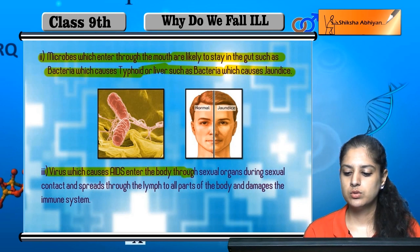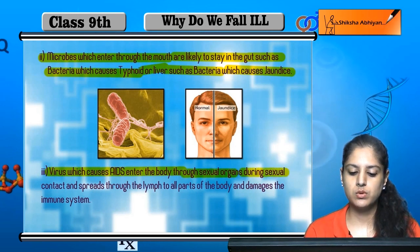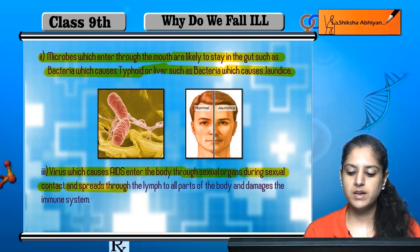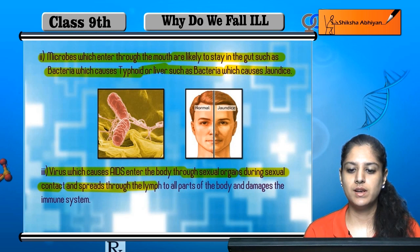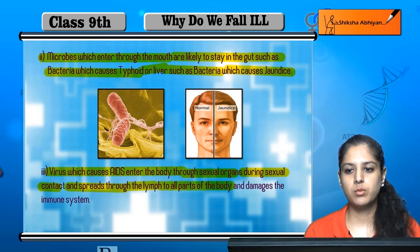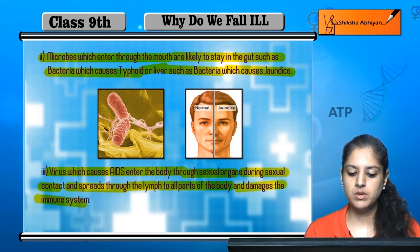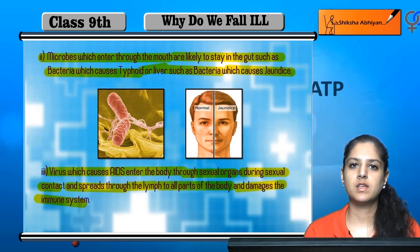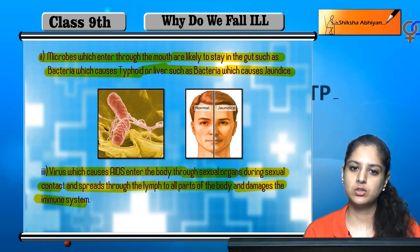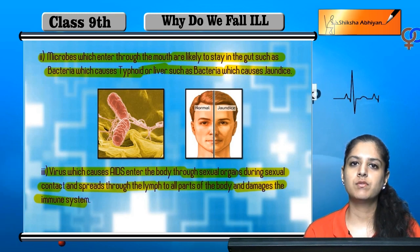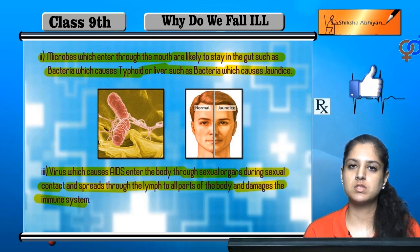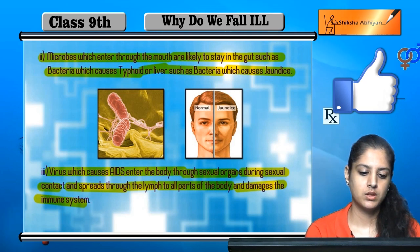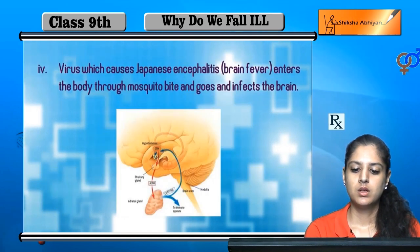The virus which causes AIDS enters the body through sexual organs during sexual contact, and spreads through the lymph to all parts of the body, ultimately damaging the immune system.